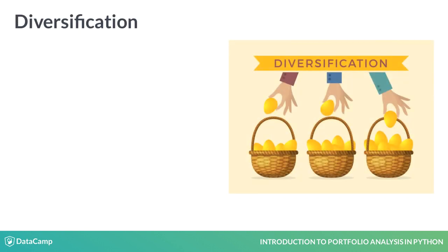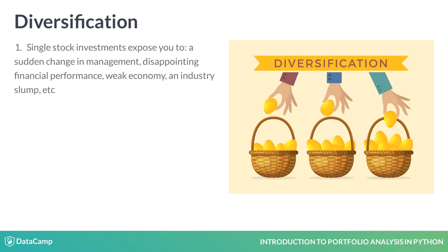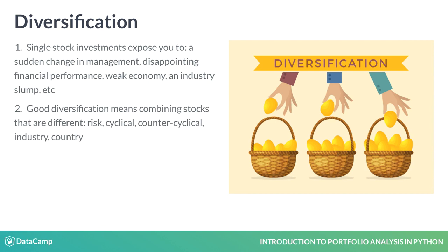When you invest in just one stock, events such as change of management, weak financial performance, difficult industry performance, etc. all will cause your investment to fluctuate heavily. By combining stocks in a portfolio, you can reduce some of those fluctuations, as positive returns in one stock can absorb negative returns in others. By smartly combining assets with different characteristics and different risk and return profiles, you can reduce the overall risk of your investments. This is called diversification.